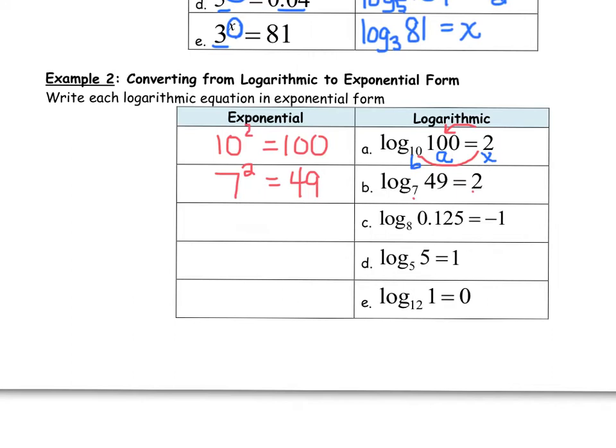Some people like to write it so that the answer is first. So maybe you say, log of base 8, so the base is 8, of the answer, so then you say the answer is 0.125, equals the exponent, which is negative 1. Some people like to write it in that order.